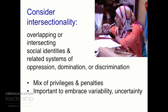Another thing to consider is intersectionality. People usually don't have just one identity. They have overlapping or intersecting social identities and related systems, and in those systems there's oppression, domination, and discrimination. There's a mix of privilege and penalty — that could be a whole day's discussion — that goes along with those identities. It's important to embrace variability and uncertainty, that everyone comes with a variety of identities when they engage in a course or some activity.